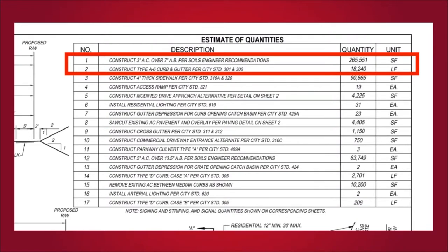Now I want to show you an example of how this would actually look and read in an actual plan set. Right here is an estimate of quantities or construction notes. Line item number one says: construct 3-inch AC over 7-inch AB per soils engineer recommendations — meaning three inches of asphalt concrete over seven inches of aggregate base. Number two says: construct Type A6 curb and gutter per city standards 301 and 306. To find those standards you'd go to the city standards and look up numbers 301 and 306 to see exactly how the city requires the curb and gutter to be installed.